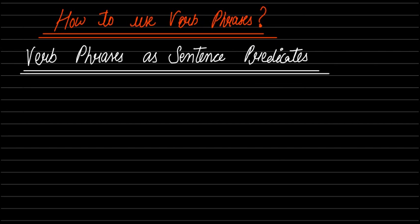So to understand how verb phrases are used as predicates in a sentence, we need to understand what a predicate is. For those who don't know, let's write it out. And for those who do know, a quick revision never hurts. So let's write: what is a predicate?